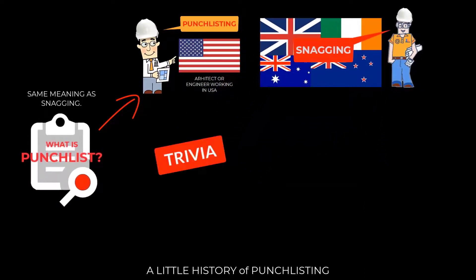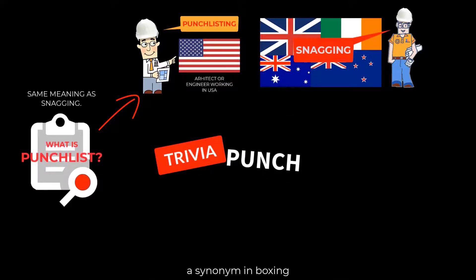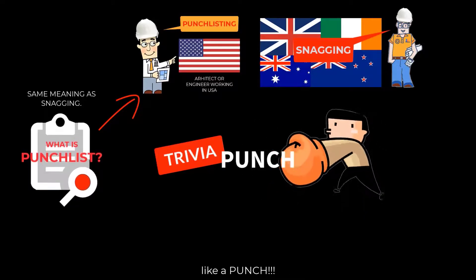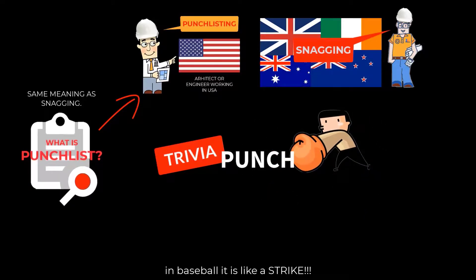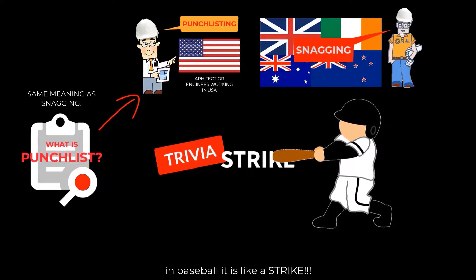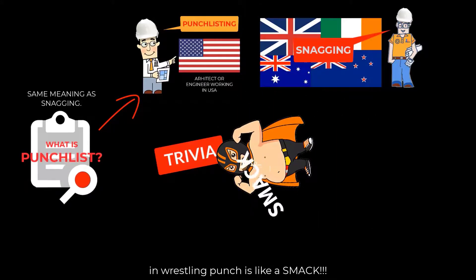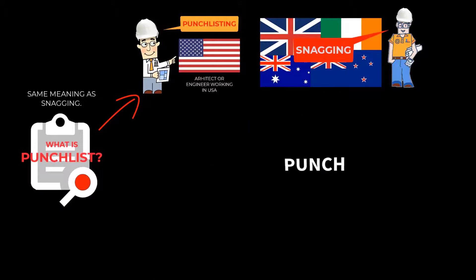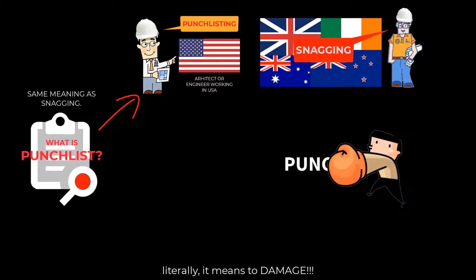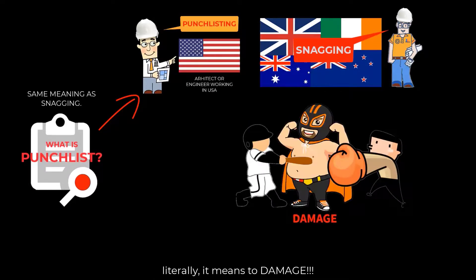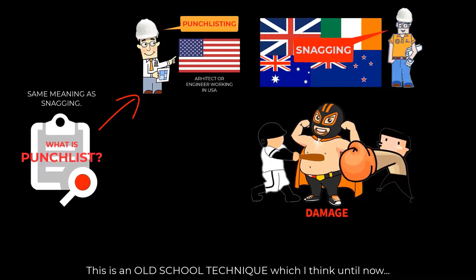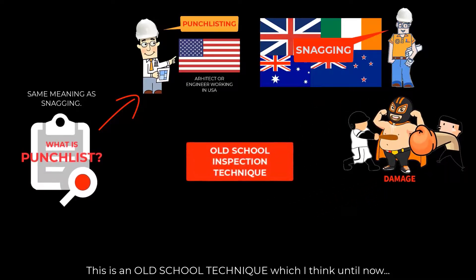A little history of punch listing: the word 'punch' is like a synonym in boxing — like a punch; in baseball, it is like a strike; in wrestling, punch is like a smug. So literally it means to damage.